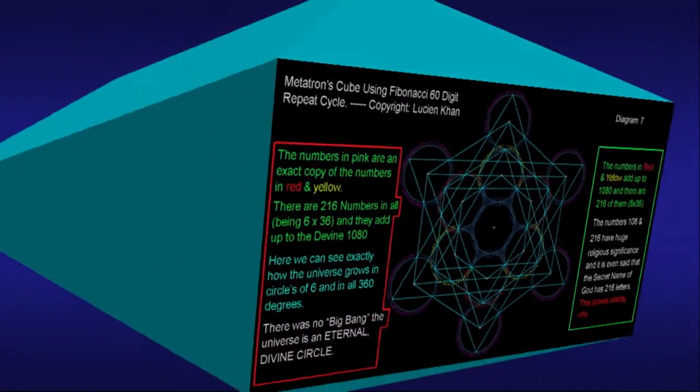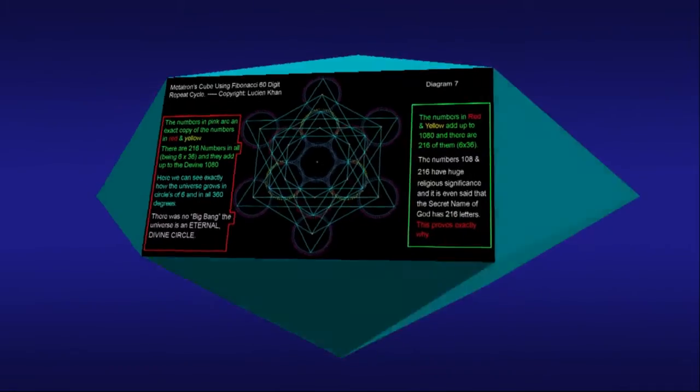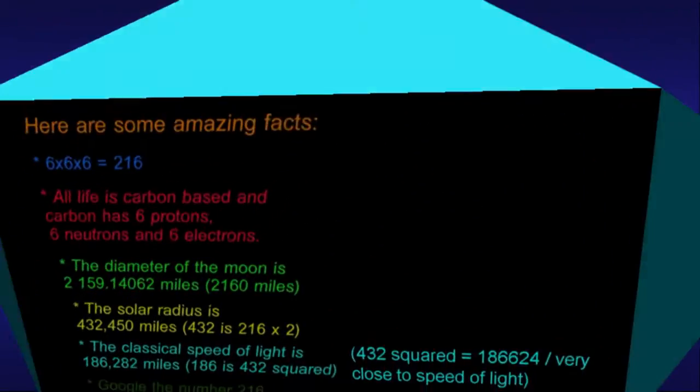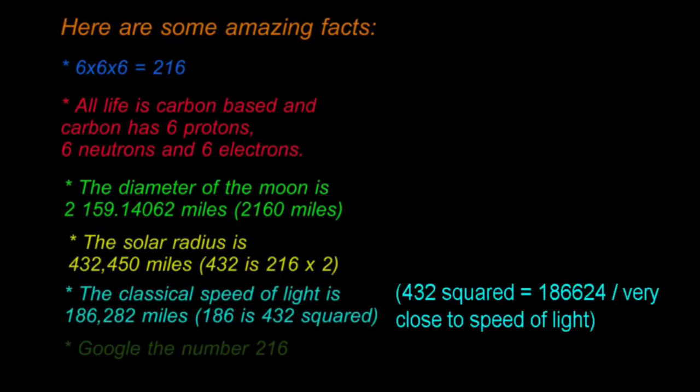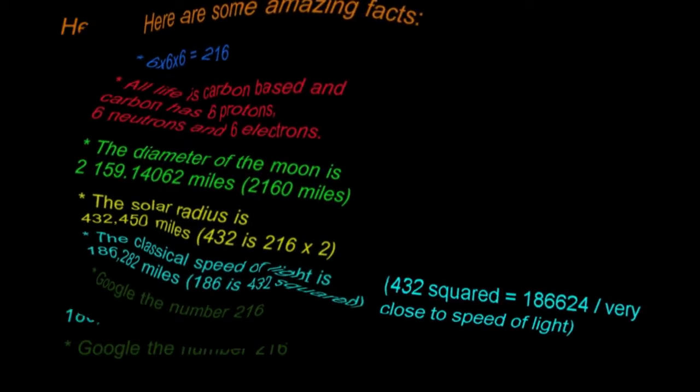6 times 6 equals 216. 108 times 2 equals 216. The size of the moon is 2160 miles. The solar radius is approximately 432,000 miles. 216 times 2 equals 432.